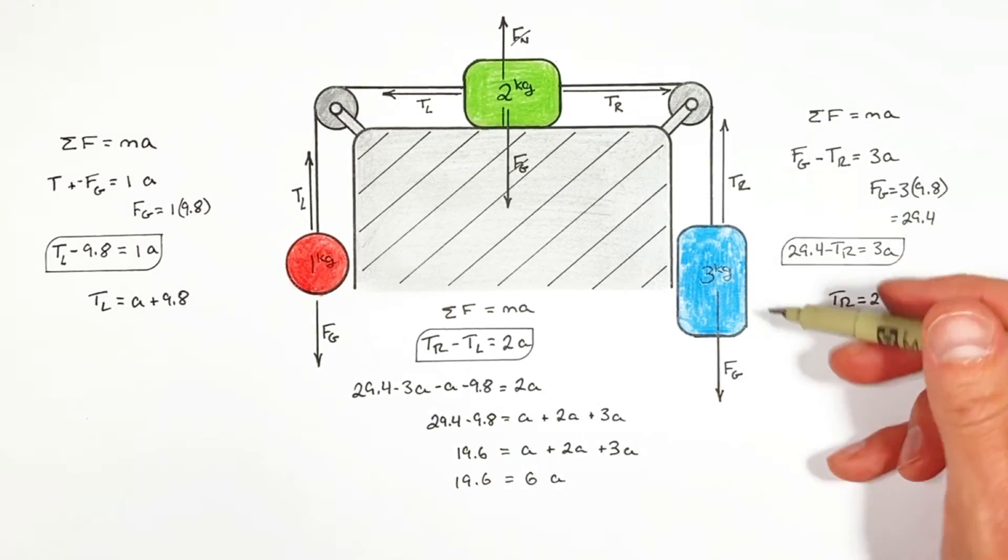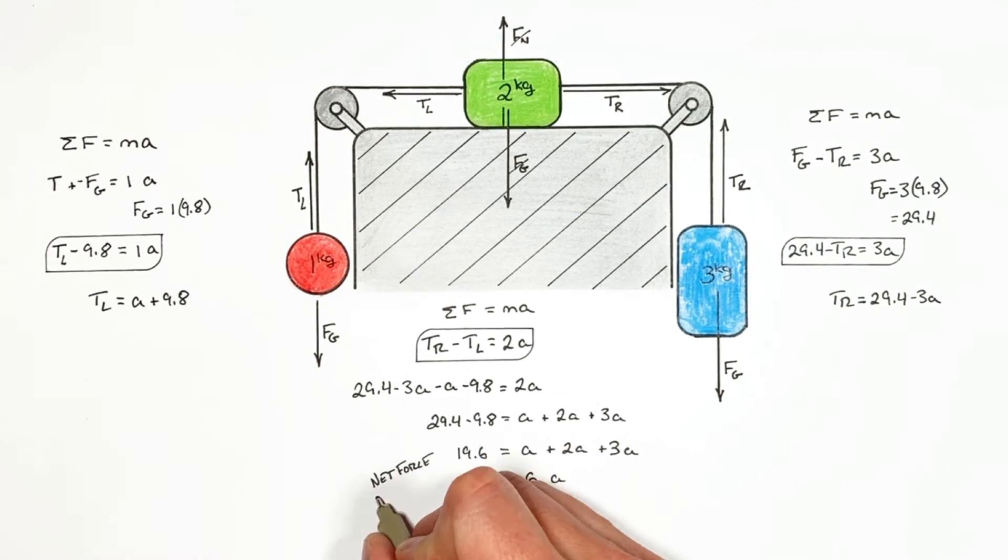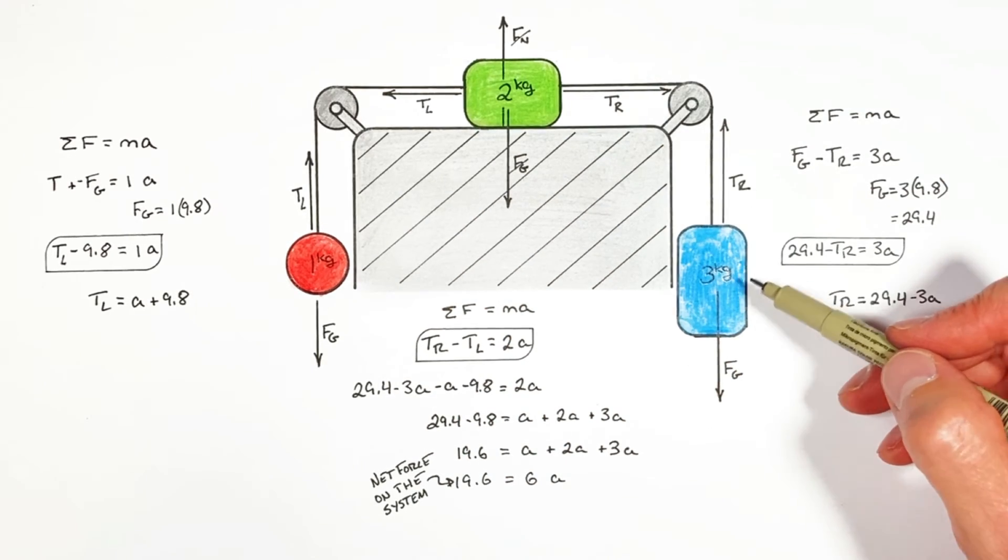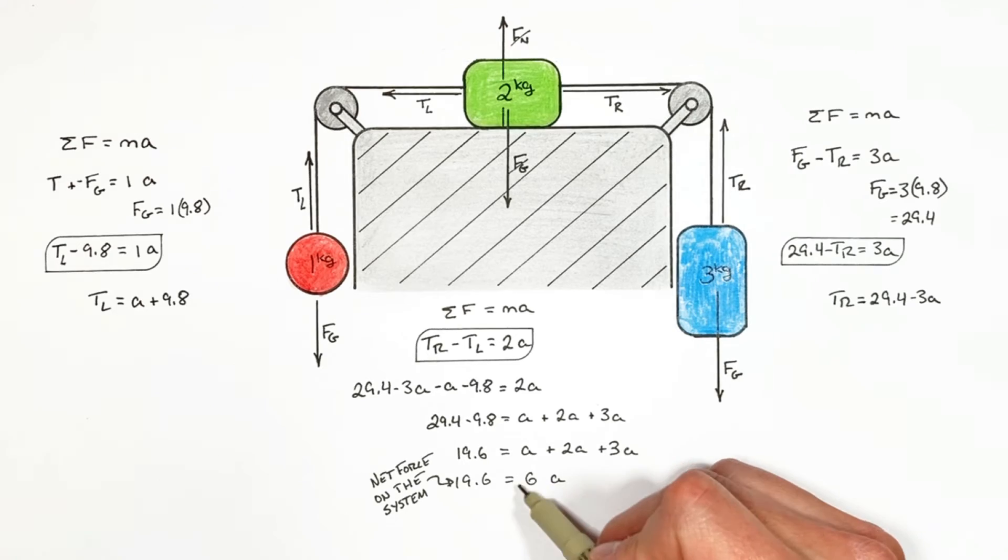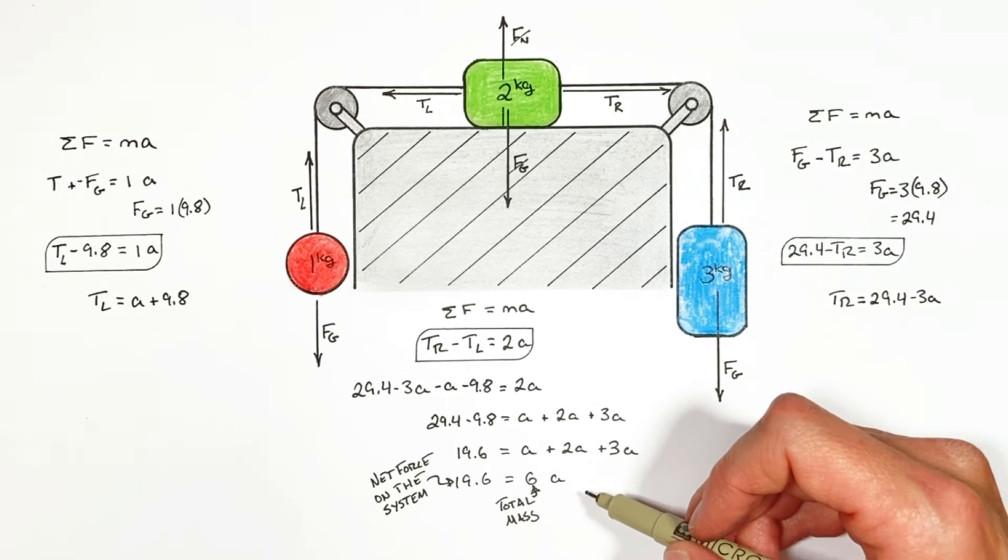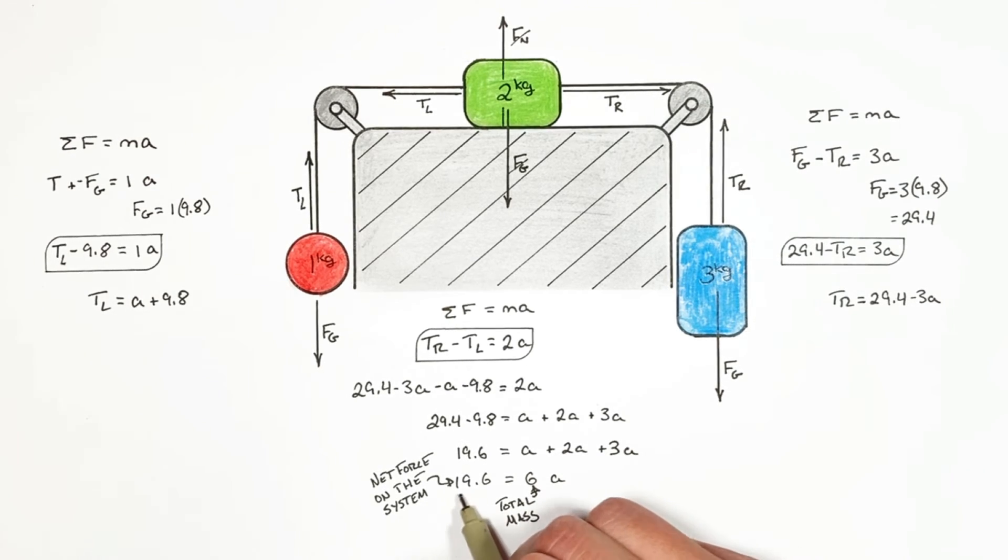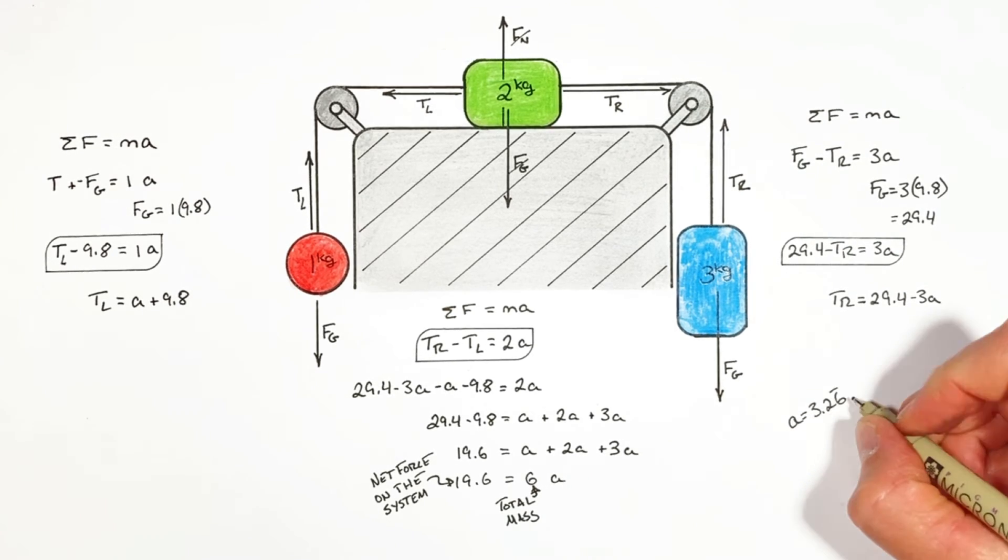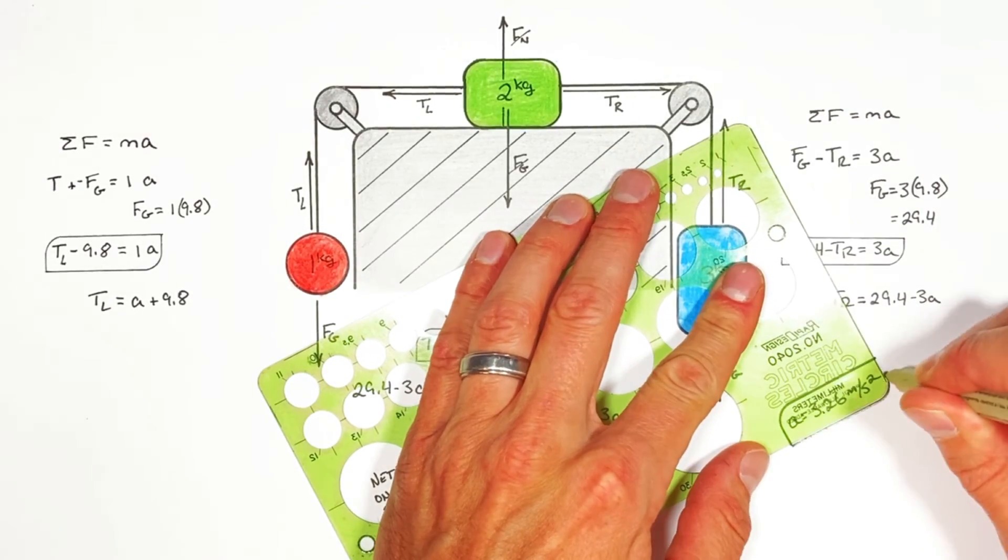And those two forces are producing a net force on the system. And that net force is causing all three blocks to accelerate. Well look at what we've got here. We've got the total mass of all three blocks. And really all this line is right here is the net force equals MA or Newton's second law. And solving for A we find the acceleration of the system or all three blocks is 3.26 meters per second squared.